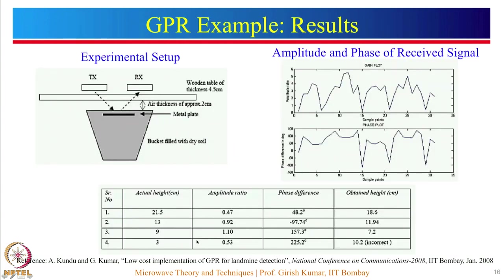Looking at the results of this GPR system, the experimental setup has transmit and receive antennas. Below is a wooden table of 4.5 cm thickness, then an air gap of around 2 cm, followed by a bucket filled with soil with a metal plate buried inside. The transmitter antenna transmits the signal, which travels through the wooden block, air, and soil, reaches the metal plate, gets reflected back, and is received by the receiving antenna. The amplitude and phase information of the received signal is shown.